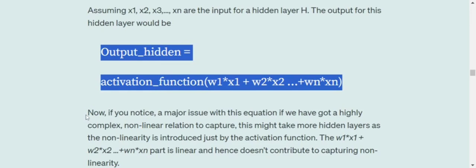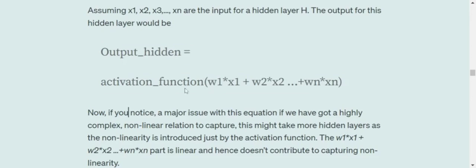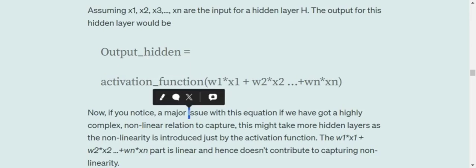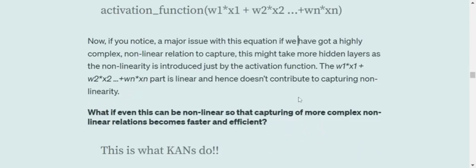Now, if you look into this particular equation, there is an issue here. If you get a very complex non-linear relationship to get captured by the neural network, only this activation function that we are using would be contributing into capturing that non-linearity. This particular part, the interior, W into x1, W2 into x2, is just capturing the linear part.